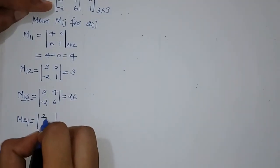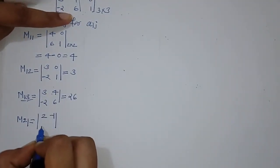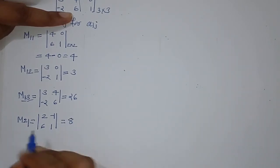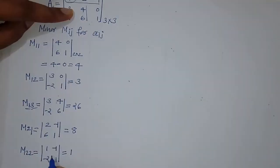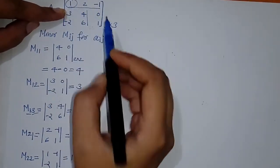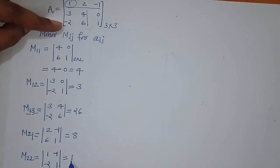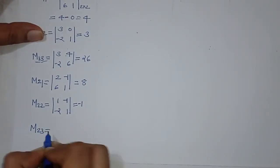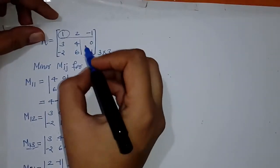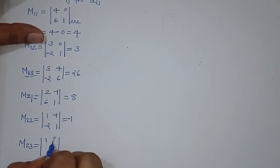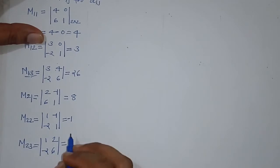For M_22, we exclude row 2 and column 2, giving elements 1, minus 1, minus 2, 1. Then for M_23, excluding row 2 and column 3, the remaining elements are 1, 2, minus 2, 6. Simplifying M_23 we get 10.